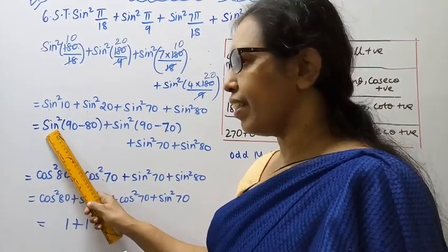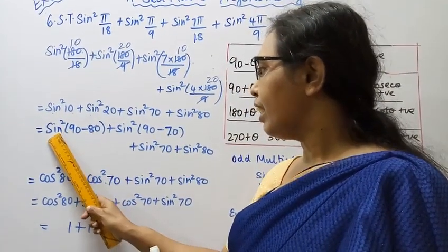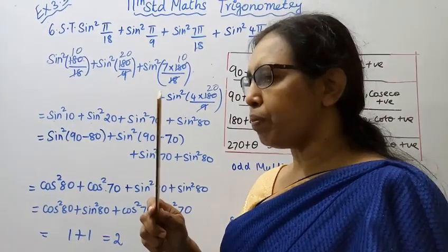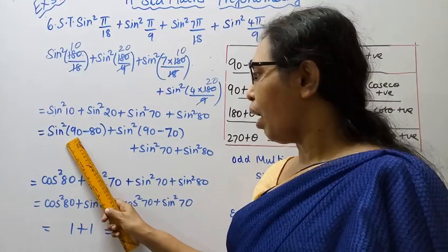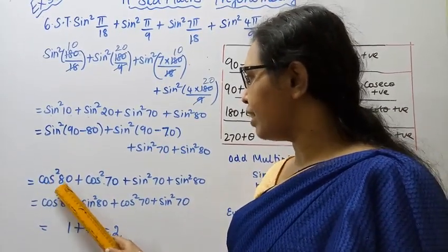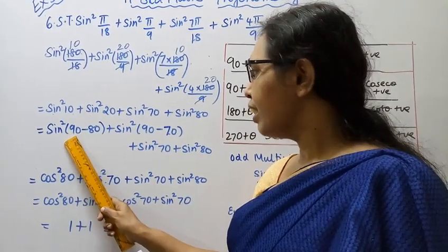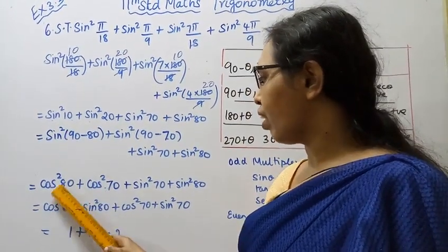Now sine 90 minus 80, what do you want to do? Odd multiples of 90. This is odd, so sin becomes cos. Sin 90 minus 80 is cos 80. Cos 80 square is cos square 80.